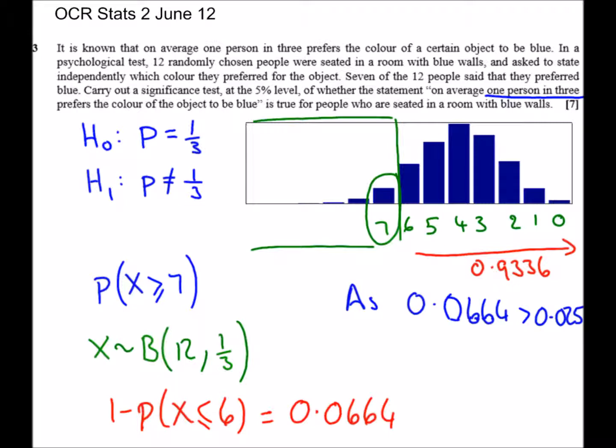And then we just need a statement at the end, something along the lines of there is insufficient evidence to reject H0. Therefore, there is insufficient evidence to say that our p-value was wrong to begin with. Therefore, we're going to say that the probability that people prefer the colour of the object to be blue is one in three.